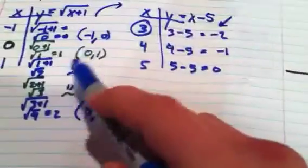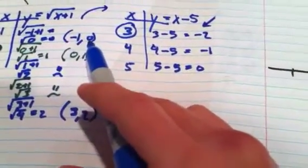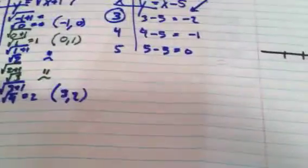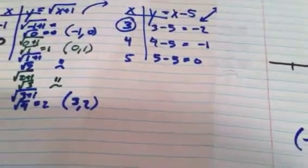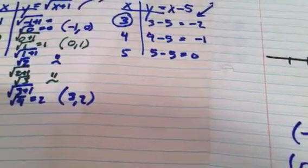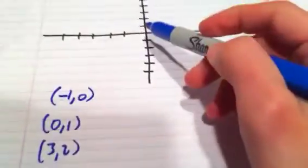So, plotting them piece by piece, I'm going to plot negative 1, 0. Let me just write my points down here. So I have negative 1, 0, 0, 1, and 3, 2 from the first guy. So I wrote them down here, and I'm going to plot them up here.